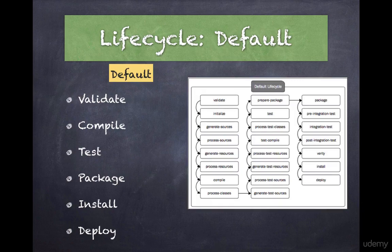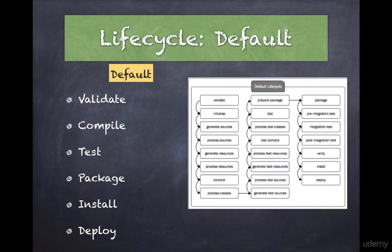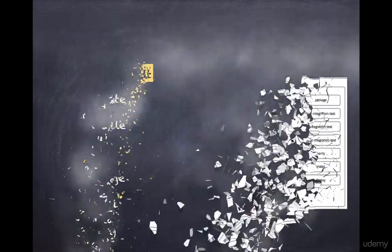Because the default lifecycle clearly defines the ordering of phases, you can generate an artifact simply by running the command mvn package. Maven will automatically execute all the phases prior to the requested phase. In this example, Maven will run phases such as compile and test prior to running the package phase. This means developers and configuration managers only have to learn and use a handful of commands.